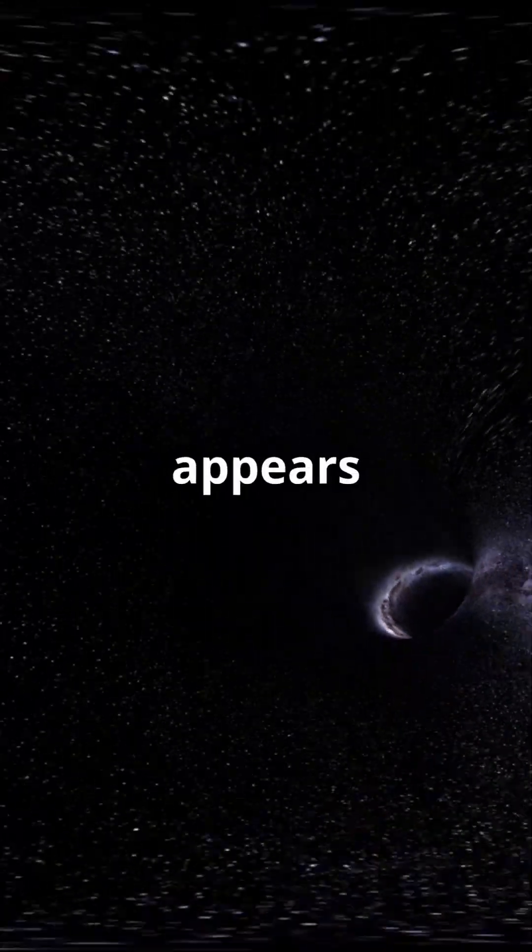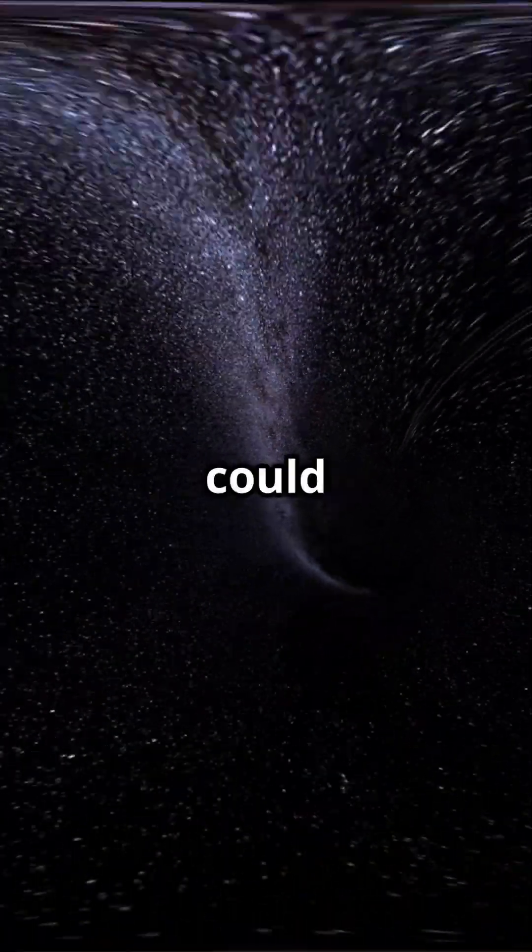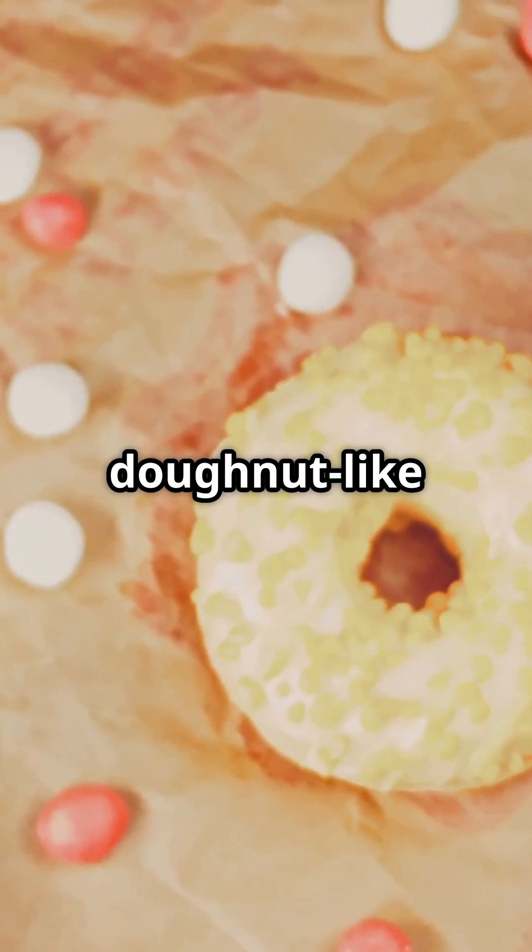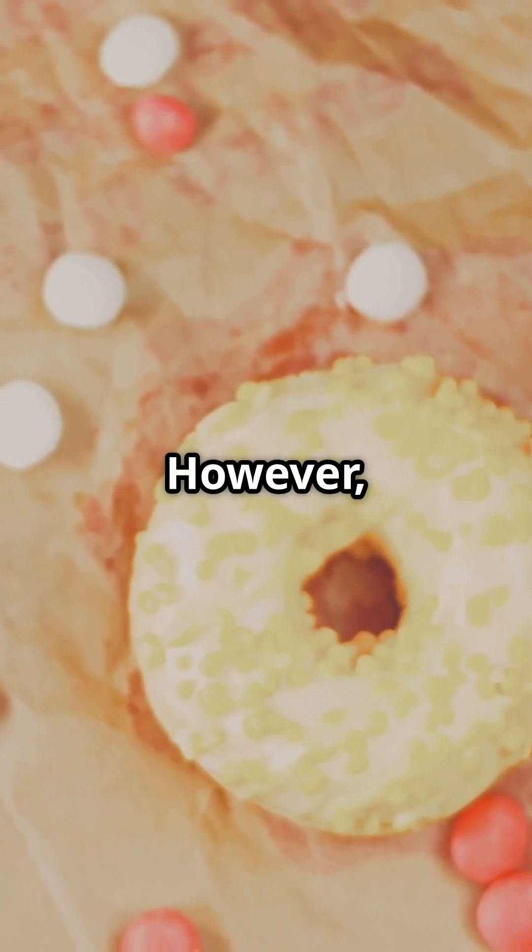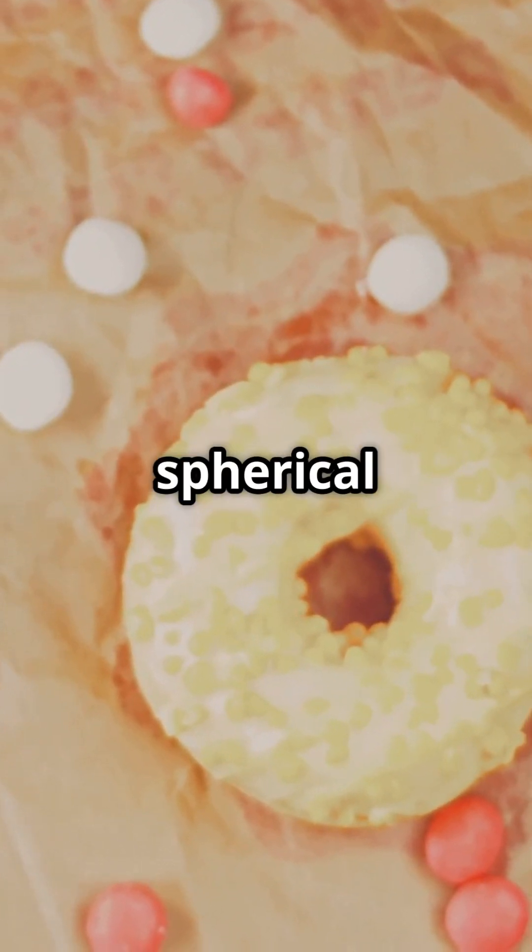Even if the universe appears flat locally, its global topology could be more complex. It may have a toroidal, donut-like, or multi-connected shape rather than a simple sphere. However, no strong evidence suggests a closed spherical structure.